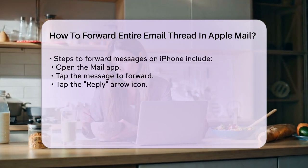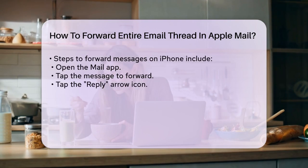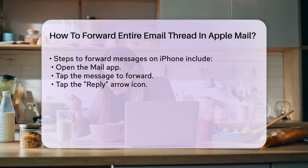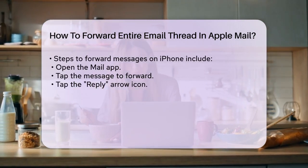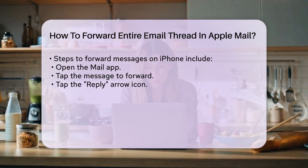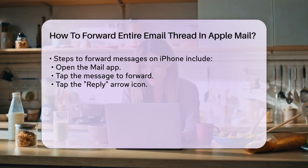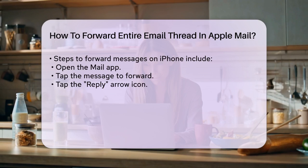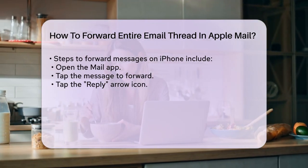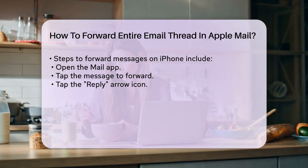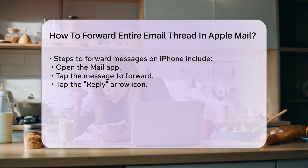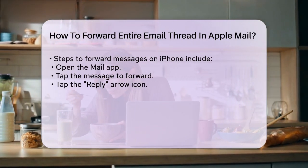If you're using your iPhone, the process is similar but even more limited — you can only forward single messages. Open the Mail app on your iPhone, tap the message you want to forward, then tap the reply arrow icon at the bottom of the screen. Choose Forward, enter the email address you want to send to, and tap Send. You'll have to do this for each message in the thread.